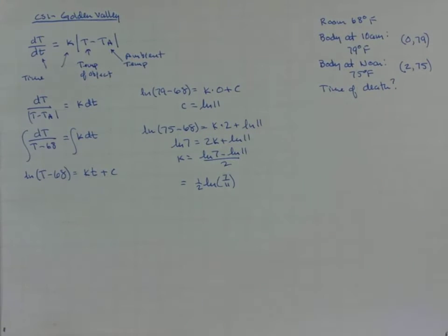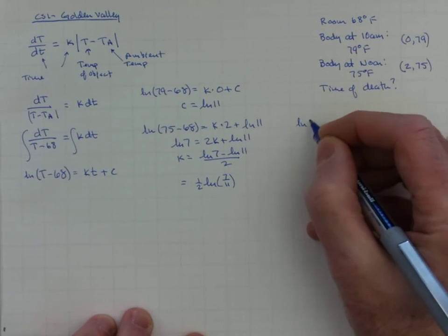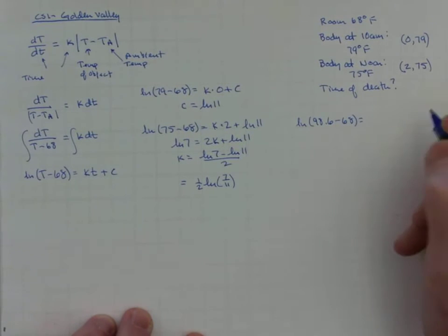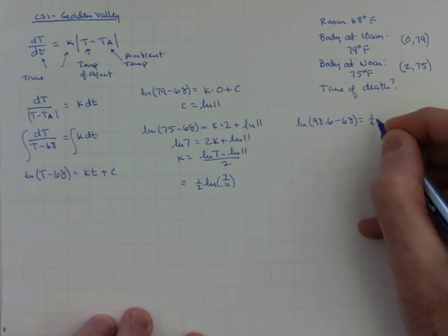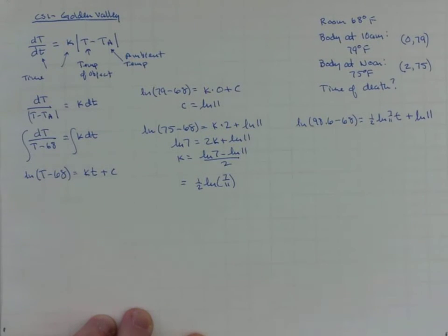We have the relationship. We know the values of the two constants. We just need to figure out the time of death. We're going to use the fact that at the time of death, in all likelihood, the temperature of the body was 98.6 degrees. Maybe the person runs a little high, maybe a little low. If you're really being careful, you might make the calculation for various plausible values of the person's temperature and see how much difference it makes. But we're just going to forge ahead under the assumption that it's 98.6. So we're going to have the natural log of (98.6 - 68) equal to this k, which is (1/2) ln(7/11) times little t, plus our c, which is ln 11.